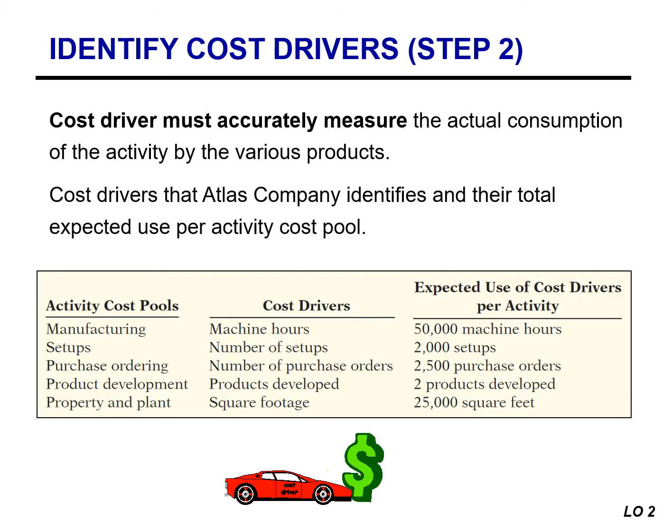Let's take a look at the cost drivers that Atlas Company identified. For the manufacturing cost pool, the cost driver was machine hours. For setup, it's the number of setups. For the purchase ordering cost pool, it was the number of purchase orders. For product development, the number of products developed. And finally, for property and plant, the cost driver is square footage. They also provided their total expected use per activity cost pool.